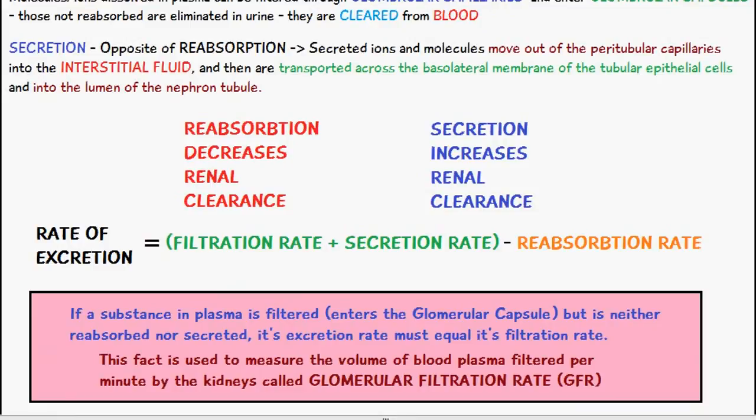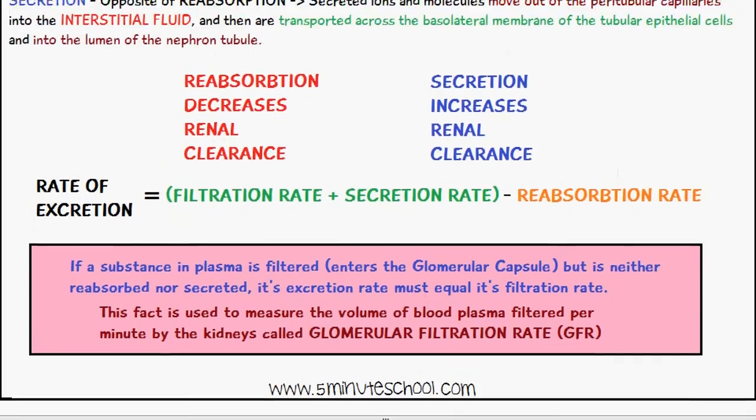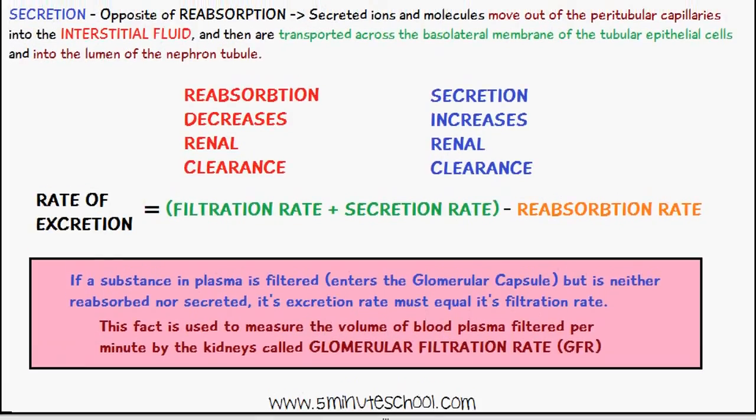The rate of excretion can be summarized by the following equation: rate of excretion equals the filtration rate plus the secretion rate minus the reabsorption rate. This gives you the rate of excretion of the plasma constituents.